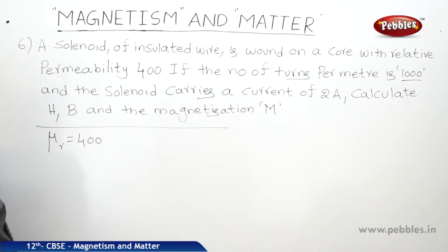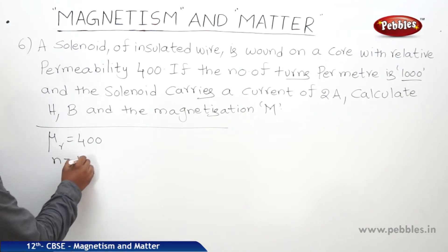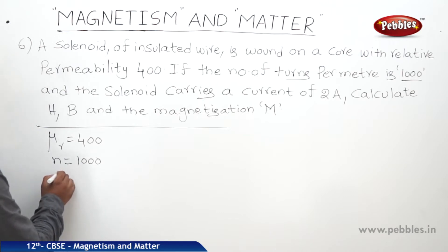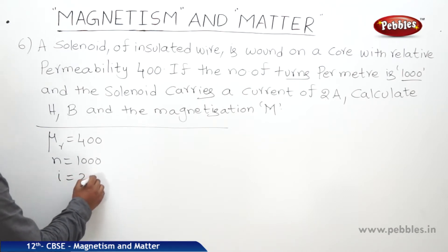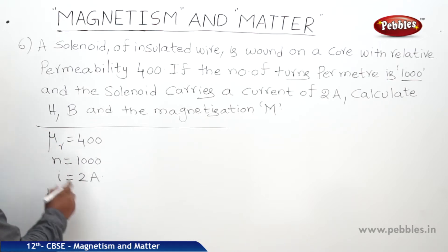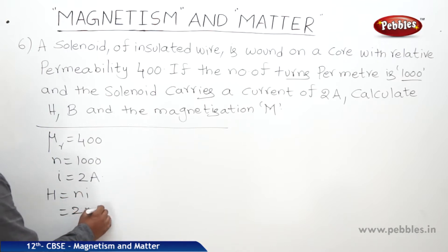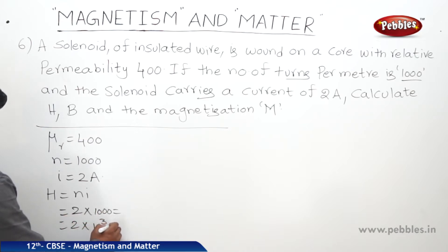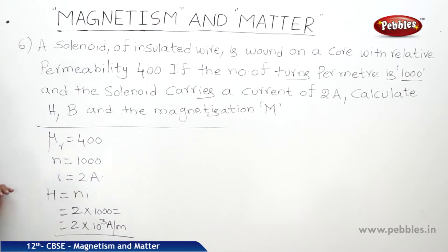The number of turns per meter n is equal to 1000, and the solenoid carries a current of 2 amperes. We need to calculate H, B, and M. H is equal to n×I, so 2×1000, giving H = 2×10³ A/m.